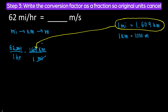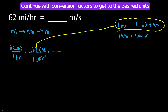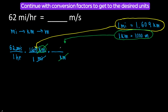Miles canceled out and we are left with kilometers, but we do not stop. We need meters, so prepare to multiply again. We are going to take this conversion factor: one kilometer is equal to 1,000 meters, and plug it in such a way to get rid of kilometers in the numerator and be left with meters. We have kilometers on top, so we will put kilometers on the bottom so they cancel out, and we will put meters on top.